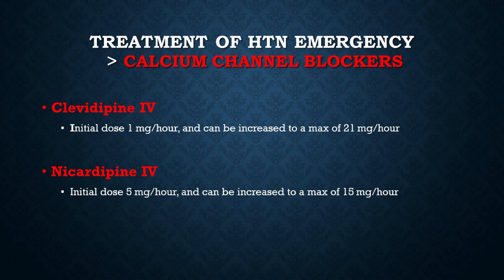Now let's discuss the treatment of hypertensive emergency. You do not want to drop the blood pressure too low too fast — I cannot stress this enough. Take immediate but careful measures so you do not cause ischemic complications. For most hypertensive emergencies, the mean arterial pressure — which is one-third systolic plus two-thirds diastolic, normally 70 to 110 — should be reduced by approximately 10 to 20% in the first hour, then gradually over the remaining 23 hours. Altogether, your goal is to drop the blood pressure approximately 25% compared with baseline.